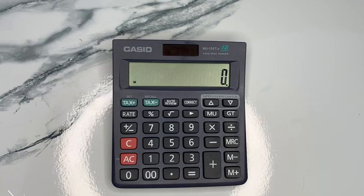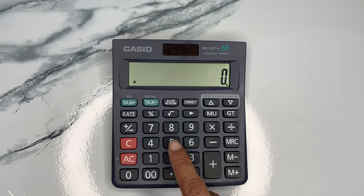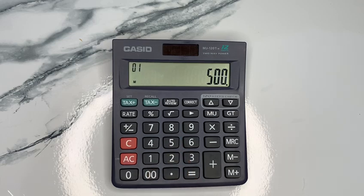How will we calculate it using the basic calculator method? First, we enter our number, which is 500, then multiply it by the percentage.